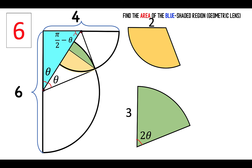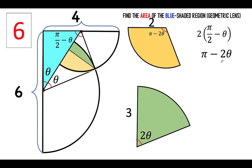Similarly, the central angle of our yellow sector would be twice this angle here, so that is 2 times (pi over 2 minus theta), which is equal to pi minus 2 theta. And so we now have the expressions for the central angles of these two sectors.